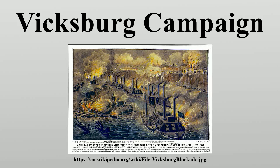Finally, Union gunboats and troop transport boats ran the batteries at Vicksburg and met up with Grant's men who had marched overland in Louisiana. On April 29 and April 30, 1863, Grant's army crossed the Mississippi and landed at Bruinsburg, Mississippi. An elaborate series of demonstrations and diversions fooled the Confederates, and the landings occurred without opposition. Over the next 17 days, Grant maneuvered his army inland and won five battles, captured the state capital of Jackson, Mississippi, and assaulted and laid siege to Vicksburg.